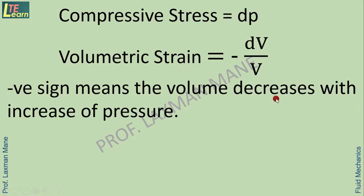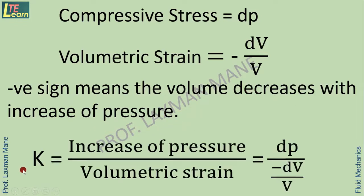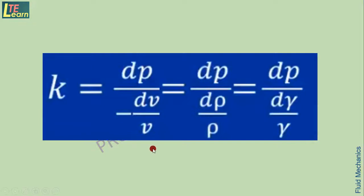The increase in pressure dP is also called compressive stress, and the ratio dV/V with a negative sign is called volumetric strain. The negative sign means volume decreases with increase of pressure. By definition, bulk modulus k equals the ratio of increase of pressure to volumetric strain: k = dP / (−dV/V). There are also other relations in terms of specific volume, density, and specific weight: k = dP / (dv/v) where v is specific volume; k = dP / (dρ/ρ) where ρ is density; and k = dP / (dγ/γ) where γ is specific weight.